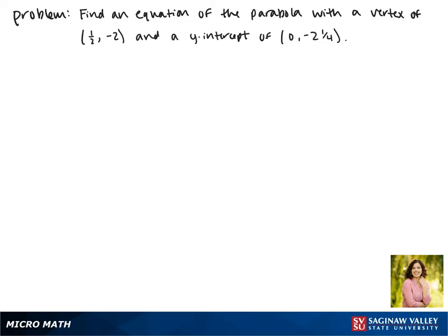Today we'll be finding an equation of the parabola with a vertex of 1 half, negative 2 and a y-intercept of 0, negative 2 and 1 fourth.